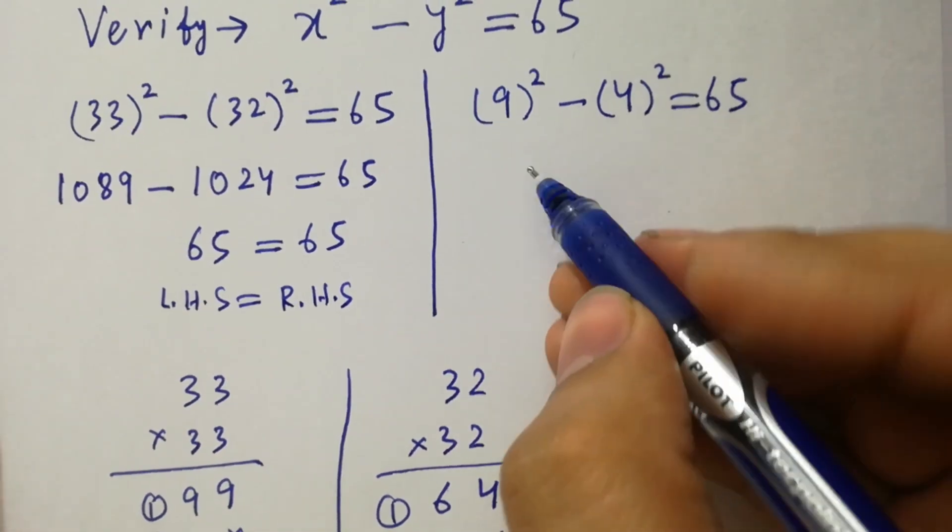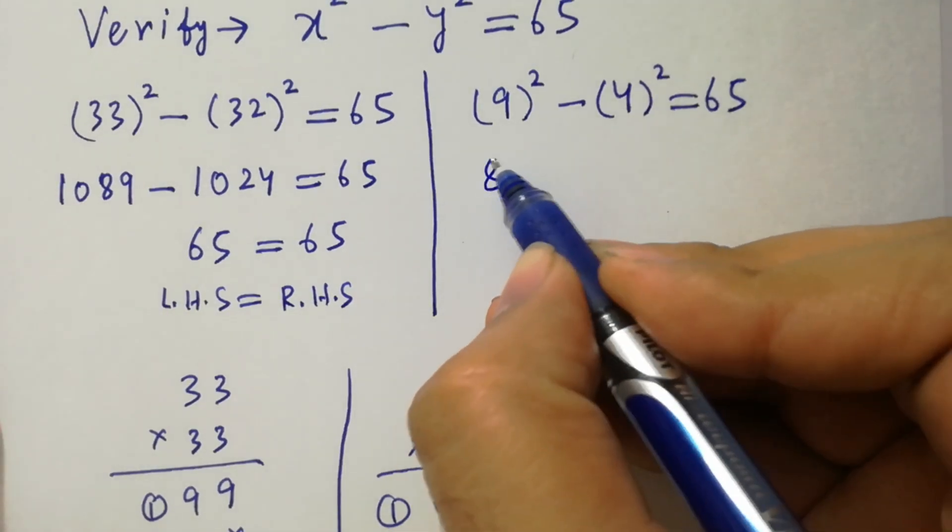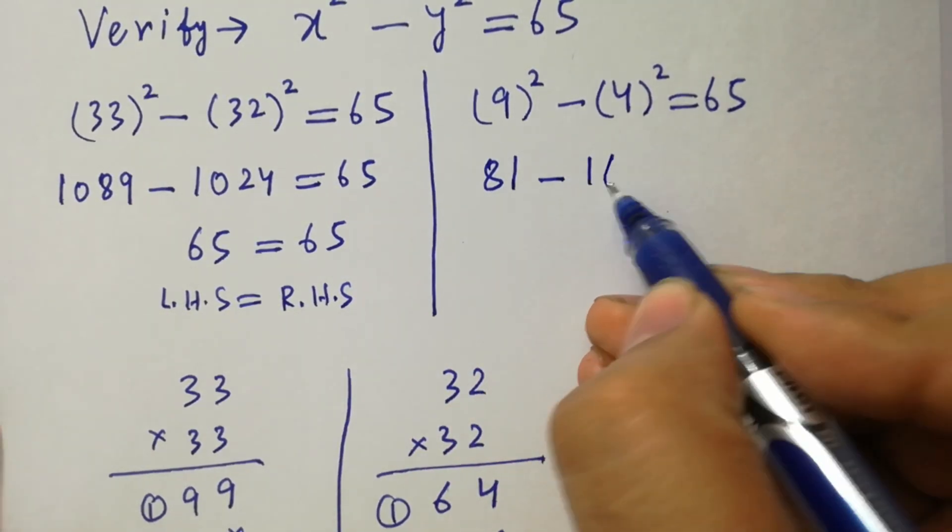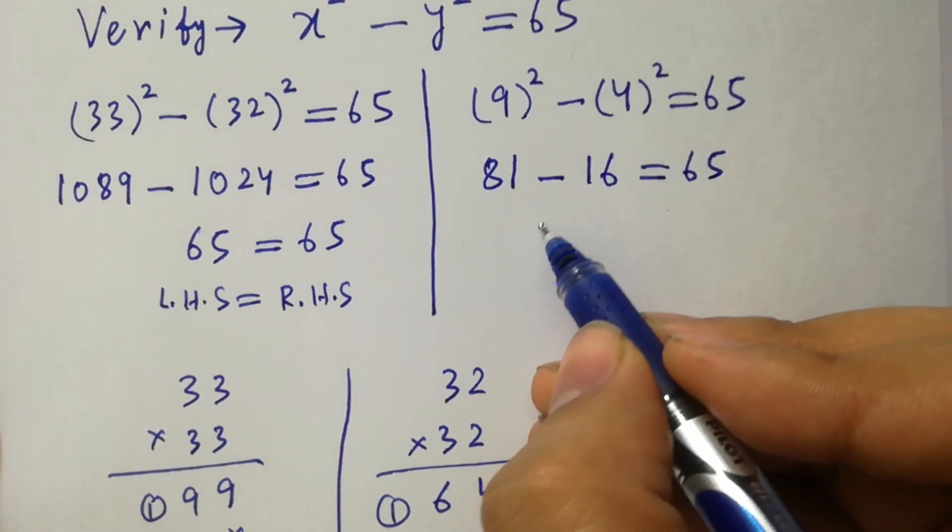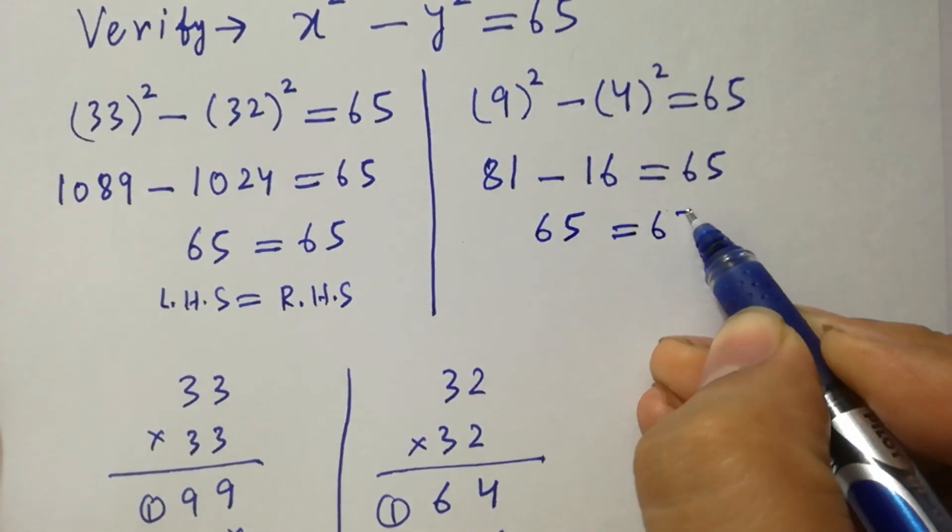Now take this. 9 times 9 is 81 minus 4 times 4 is 16 equal to 65. 81 minus 16 is 65, equal to 65.